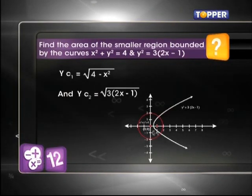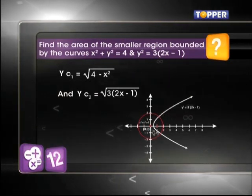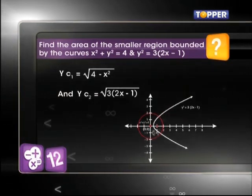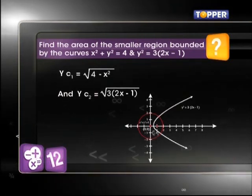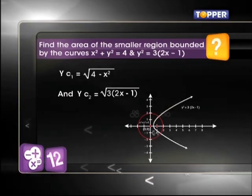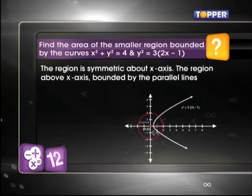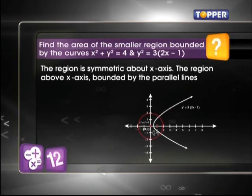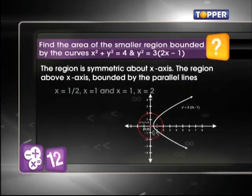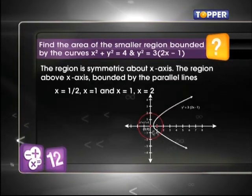Then, the first equation can be written as yc1 = √(4-x²) and yc2 = √[3(2x-1)]. The region is symmetric about x-axis. The region above x-axis bounded by the parallel lines x = 1/2, x = 1 and x = 1, x = 2.